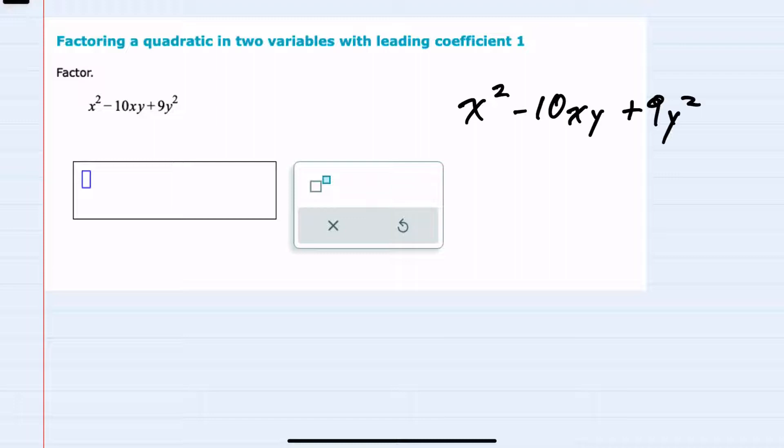We're asked to factor x squared minus 10xy plus 9y squared. As before, I can use either trial and error or the AC method. Since the numbers are relatively small, I'll use trial and error.